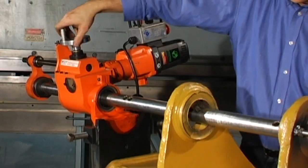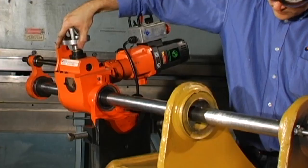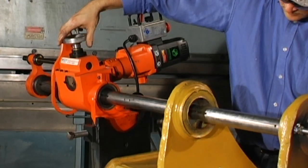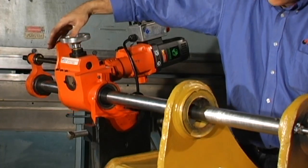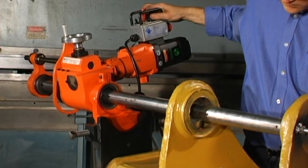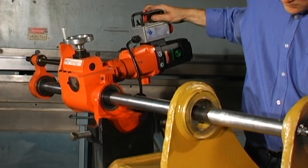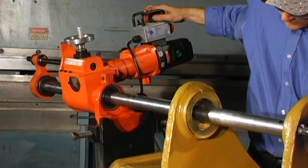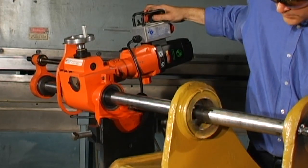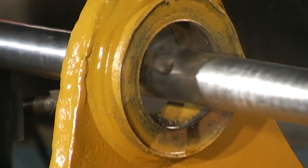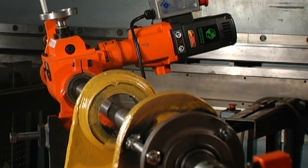Start the boring bar drive motor, engage the feed clutch, and adjust the feed rate. Slowly increase the rotational speed and periodically add small amounts of machining oil.